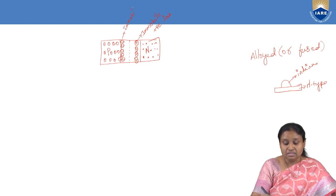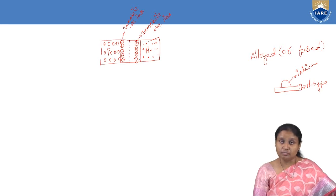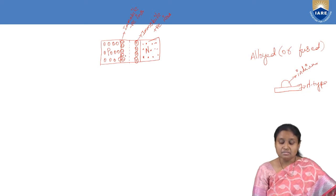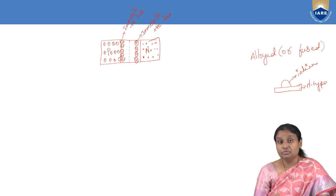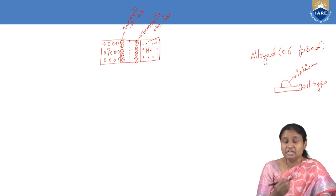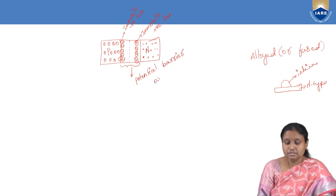Under equilibrium conditions, because of this charge separation, a potential barrier is developed. This barrier voltage prevents further diffusion of charge carriers. This particular layer — consisting of immobile positive and negative ions — is called the potential barrier or depletion layer. When we apply external voltage to this PN junction, this potential barrier or depletion layer will change: its width will either increase or decrease depending upon how we bias the PN junction.